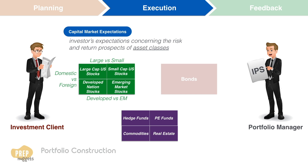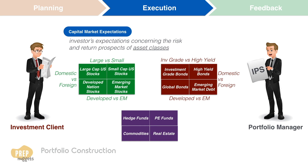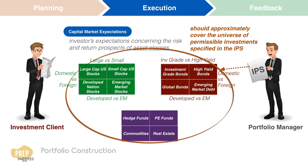With bonds, we can divide the overall universe of bonds into asset classes based on criteria such as whether they're domestic or foreign, based in developed or emerging markets, or investment-grade or high-yield. For a US investor, bonds can be subdivided into investment-grade bonds, high-yield bonds, global bonds, and emerging market debt. Overall, the asset classes considered should approximately cover the universe of permissible investments specified in the IPS.